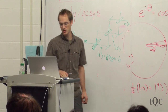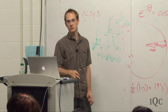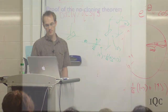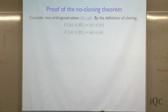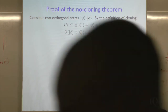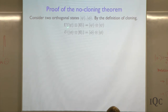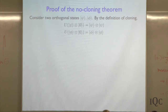We're going to quickly go through the proof that it's not possible to clone quantum states. Imagine that we have two different orthogonal states — if we have an interesting system, it has at least two orthogonal states. Suppose we have two orthogonal quantum states psi and phi, and we have some device which clones them. This is a proof by contradiction. We imagine that we have some device which clones these quantum states. By the definition of cloning, if we input psi tensor zero — so we have two registers, one in state psi and the other in state zero — the cloner produces psi tensor psi. Similarly, if the input state was phi, it makes two copies of phi.